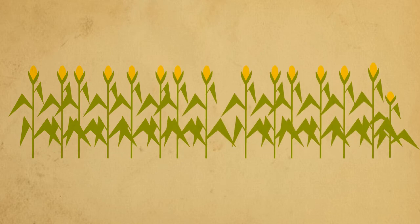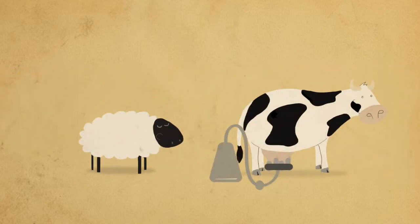Some of the processes involved in agriculture are the planting and harvesting of crops, feeding animals and milking.